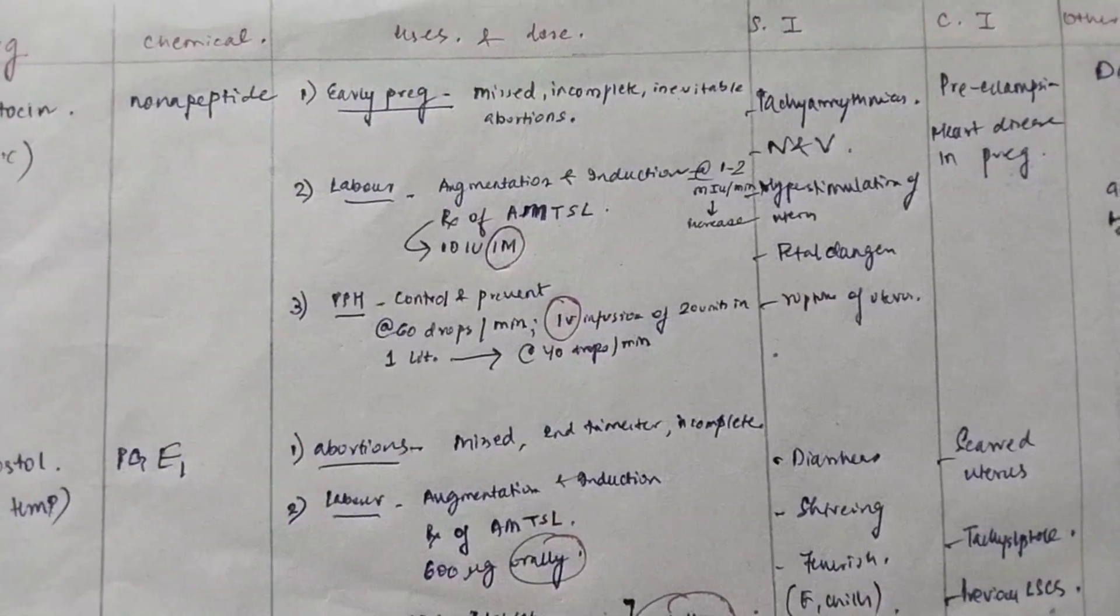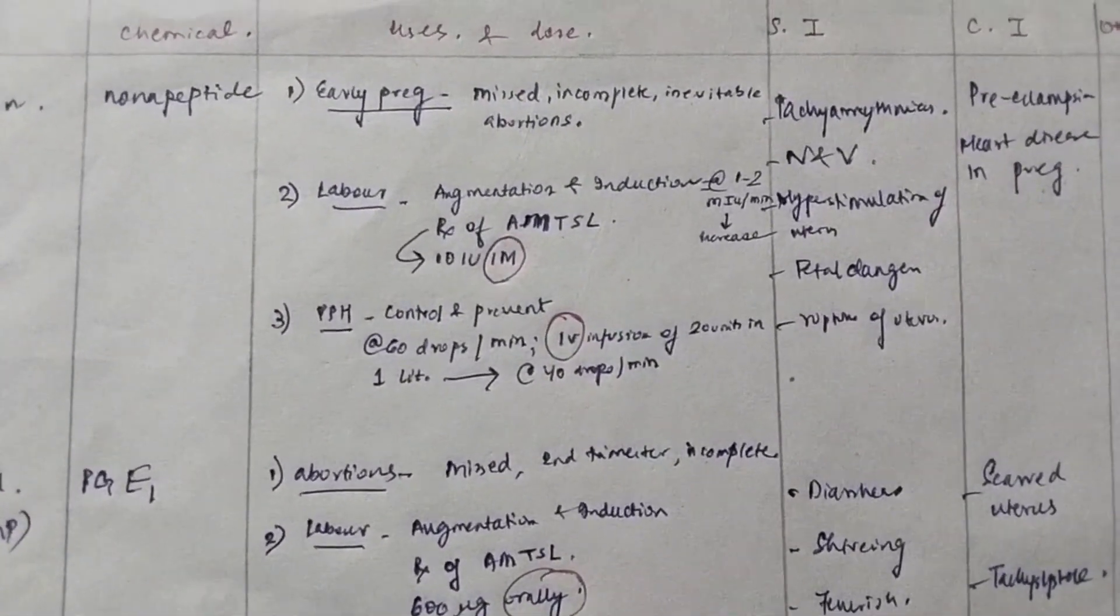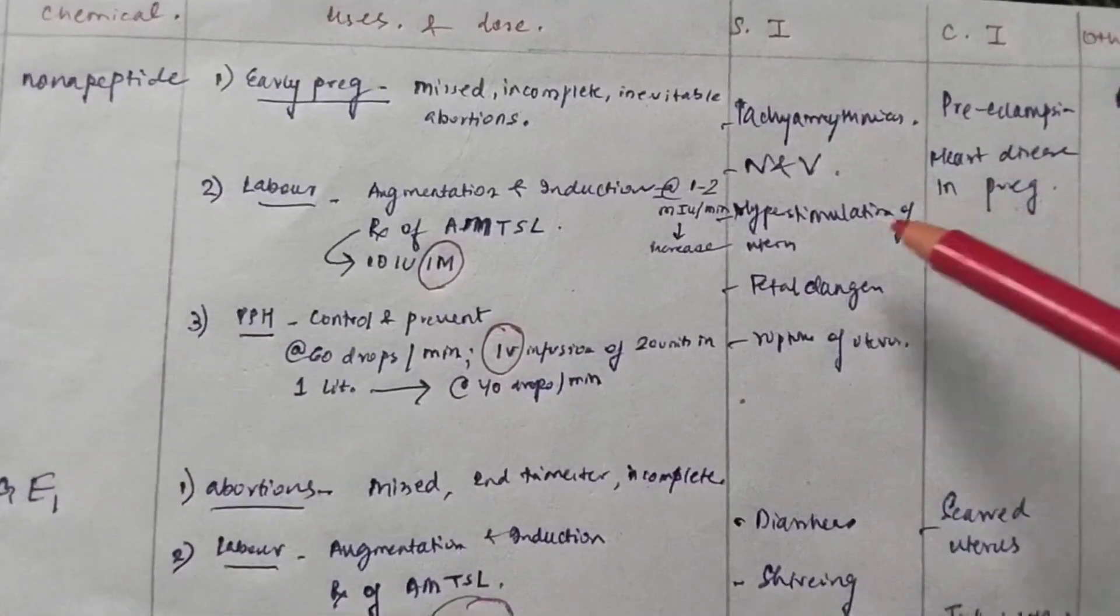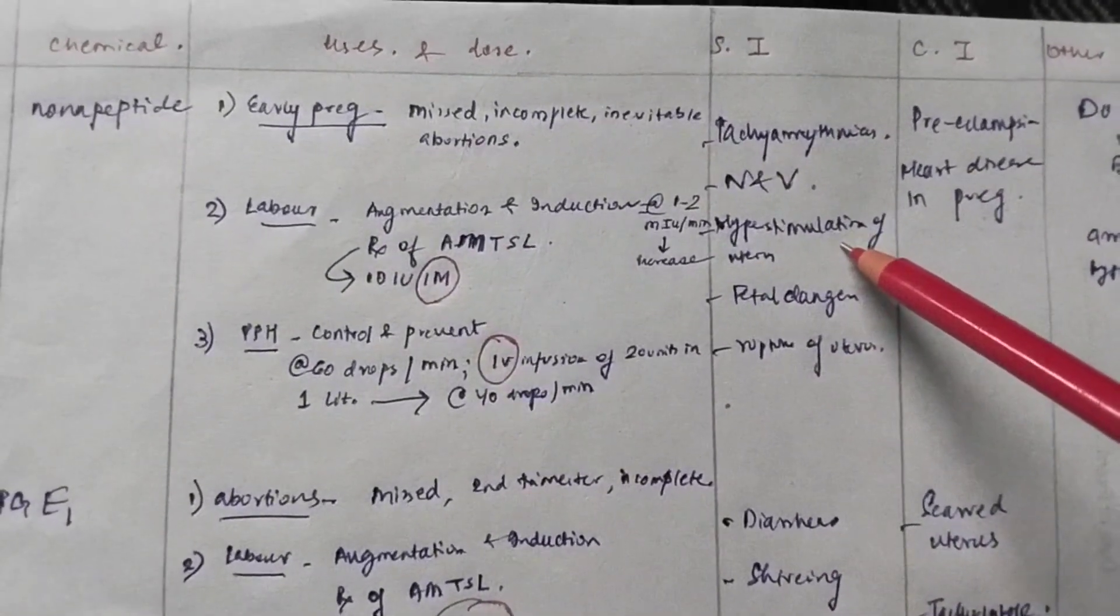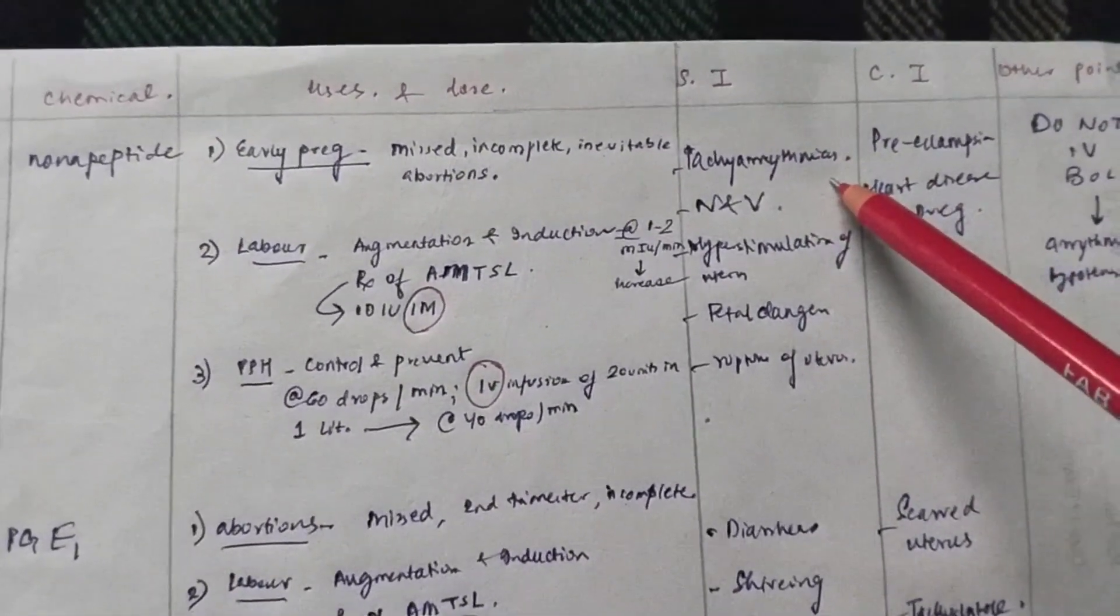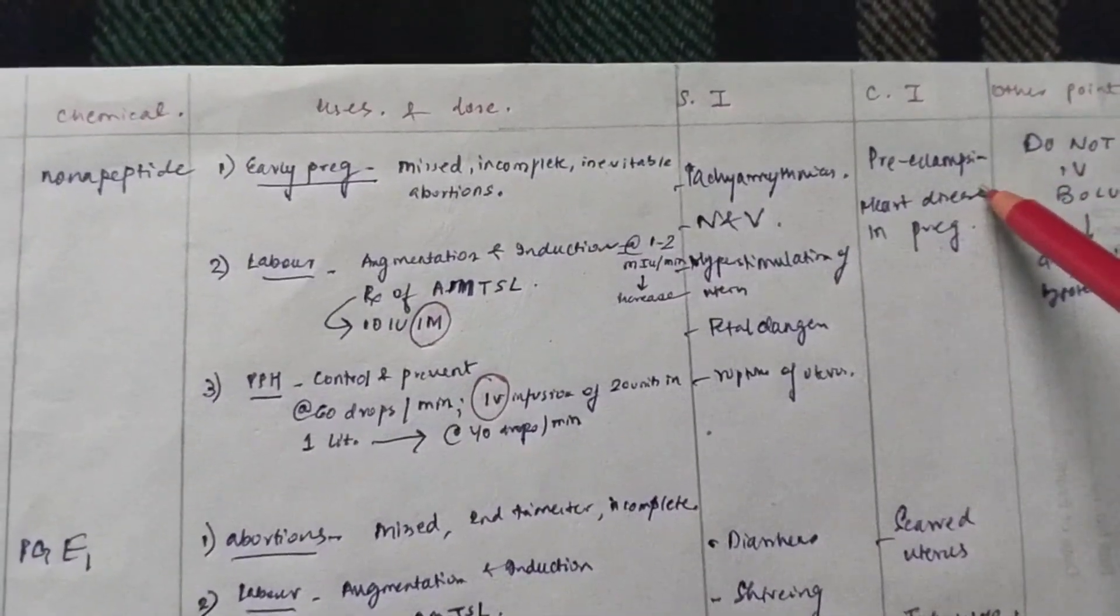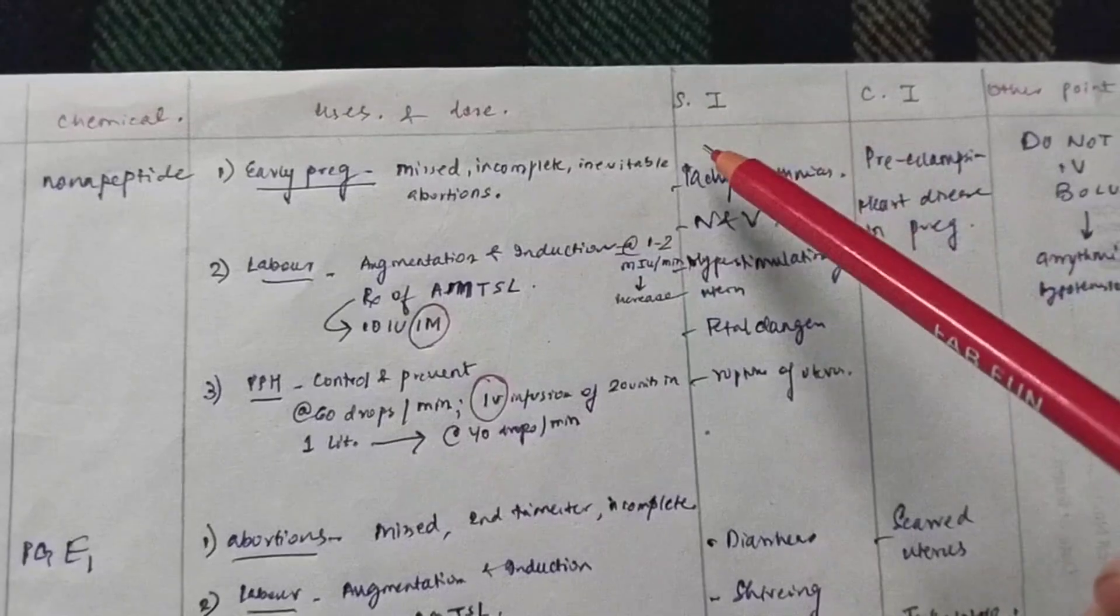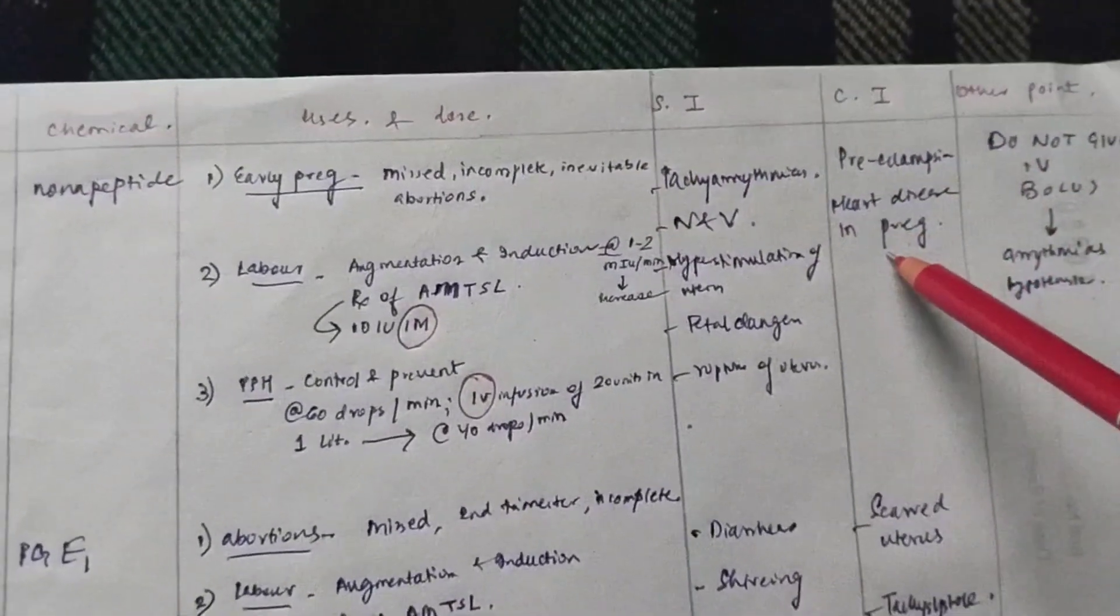What are the side effects of oxytocin? Side effects are that they will cause hyperstimulation of uterus, so it can cause hyperstimulation that can cause a rupture of the uterus. Also, nausea vomiting and tachyarrhythmias. What are the contraindications of these drugs? Pre-eclampsia or tachyarrhythmias related to heart. So, contraindications be in heart disease. Like pre-eclampsia and heart disease in pregnancy.